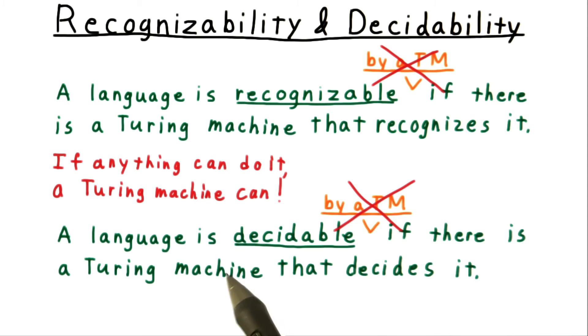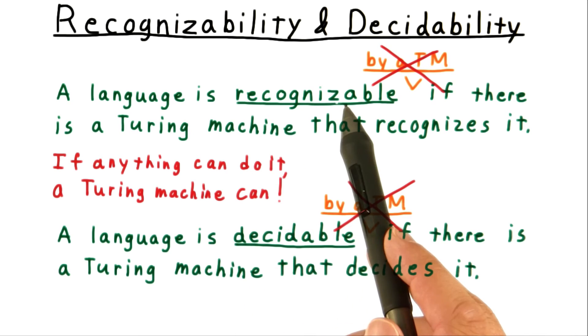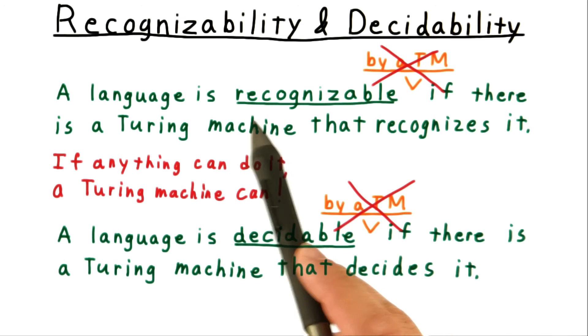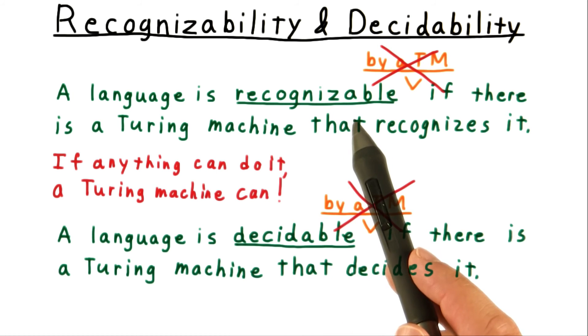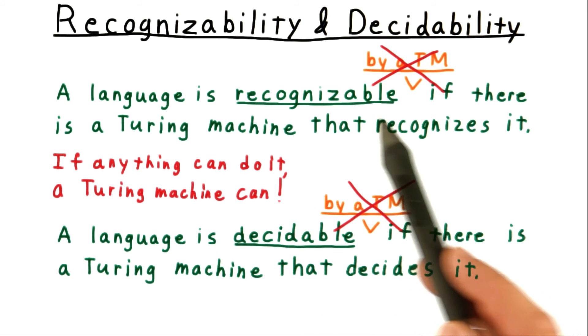Another equivalent term for decidable is recursive. Mathematicians often prefer this word. And those who use that term will refer to recognizable languages as recursively enumerable. Some also call these languages Turing acceptable or semi or partially decidable.